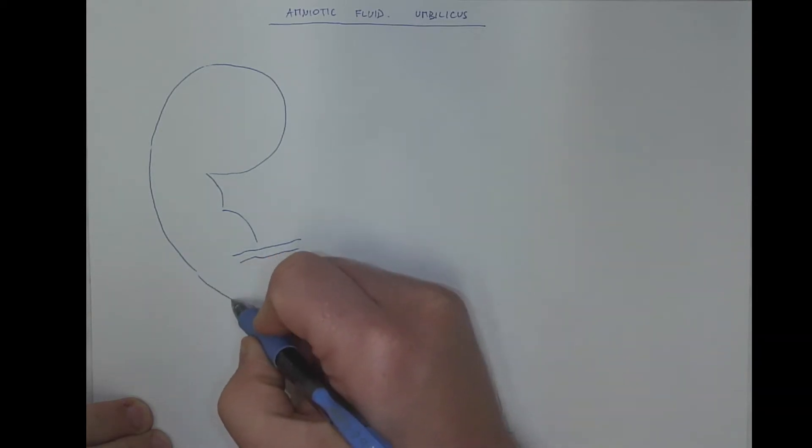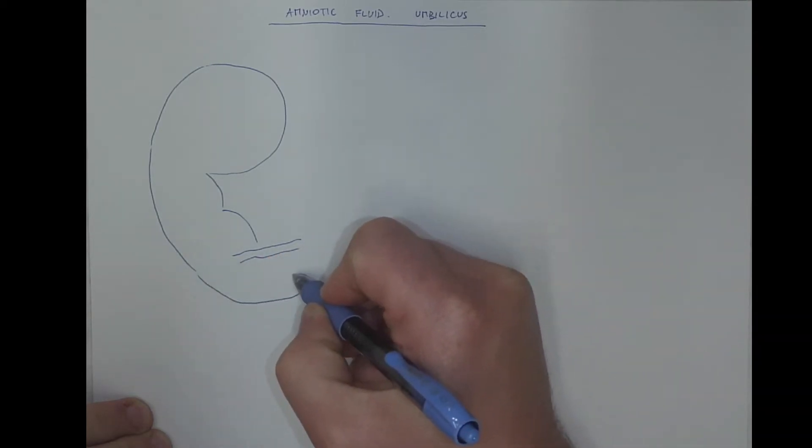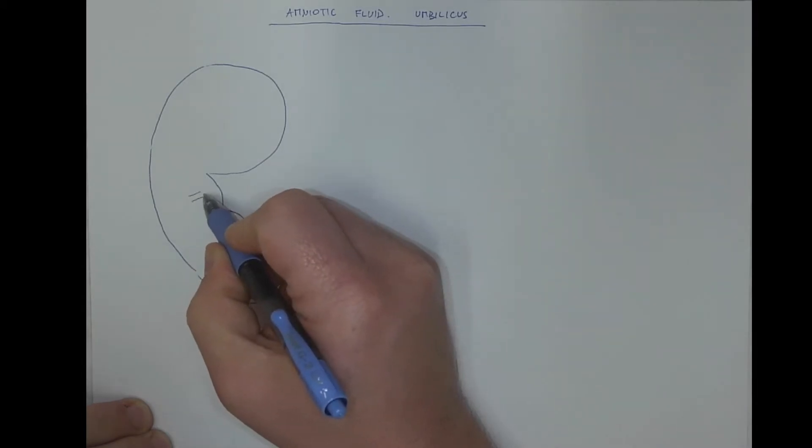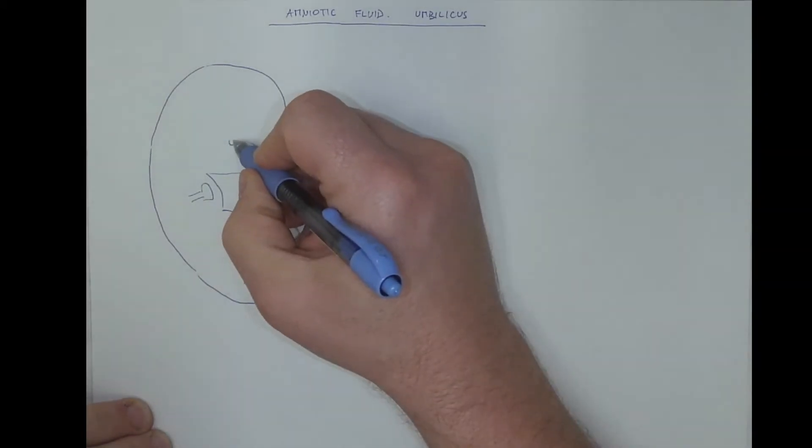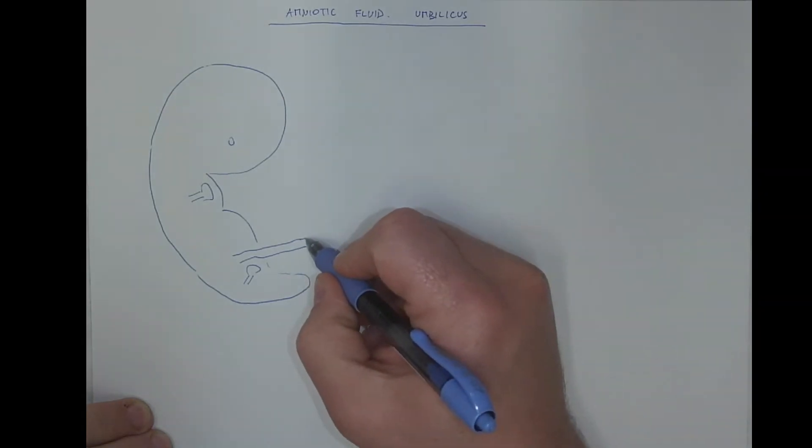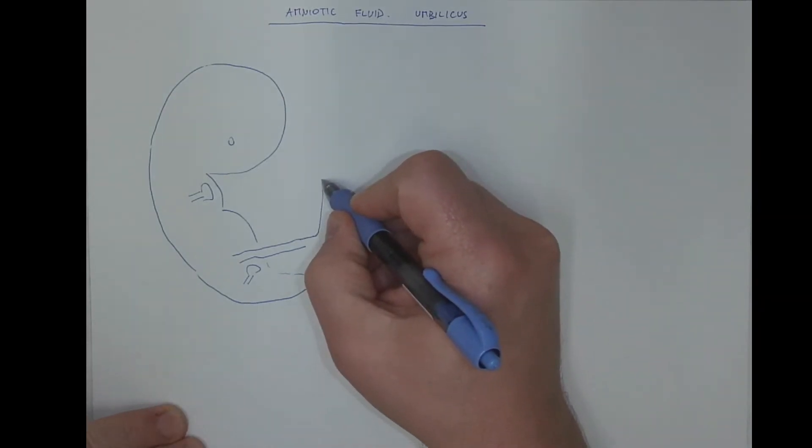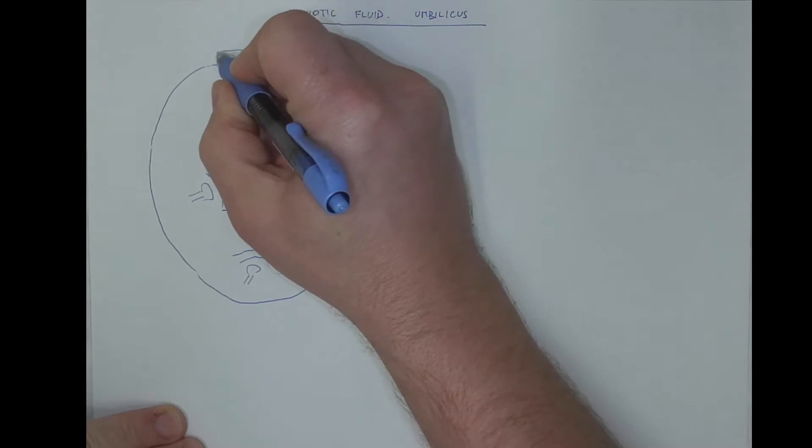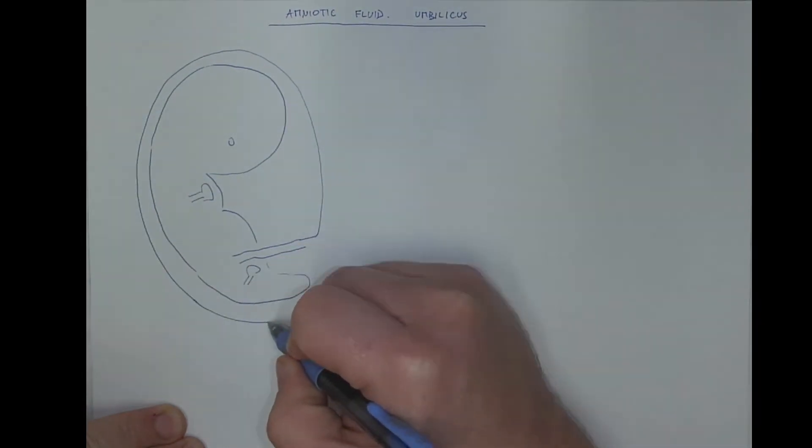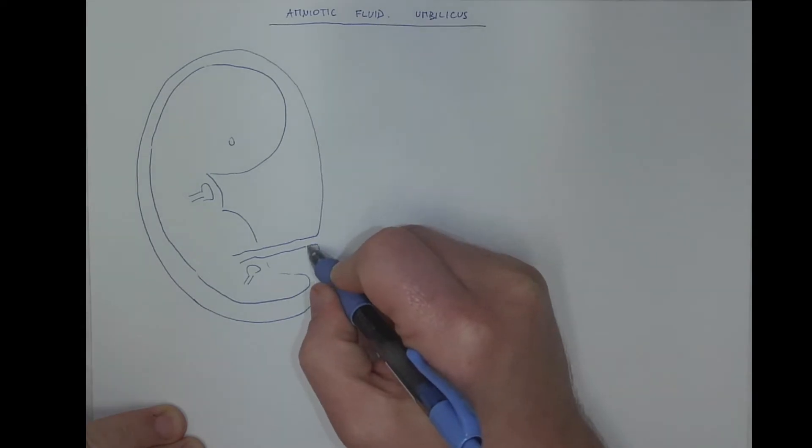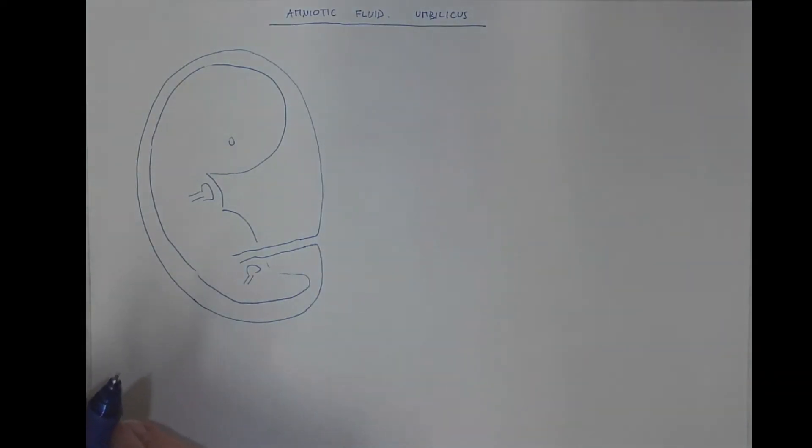In a simplified scheme of an embryo with the umbilicals, the inner fetal membrane is called the amnion and it encircles a space called the amniotic cavity. The amniotic cavity is filled with an amniotic fluid.